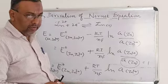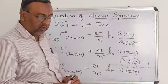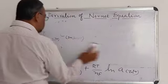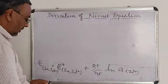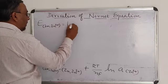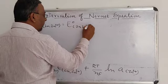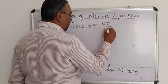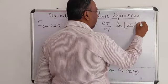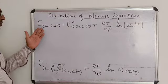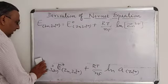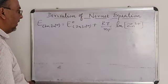When the solution is very dilute, the activity is almost equal to concentration. Therefore, we can write this equation as: E = E° plus RT/NF into ln of concentration of Zn²⁺. This shows the EMF of the zinc electrode is directly proportional to the concentration of Zn²⁺.